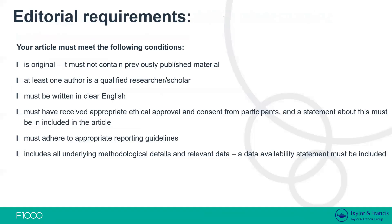To give a summary of the editorial requirements needed for your article to pass our initial checks and not be desk rejected: the article must be original, not plagiarized, with no large parts of textual overlap that aren't referenced. At least one author must be a qualified researcher adhering to our authorship criteria. The English must be clear and legible. It must have appropriate ethical approval and consent from participants with a statement included. It must adhere to appropriate reporting guidelines, and it must include all underlying methodological details and a relevant data availability statement.